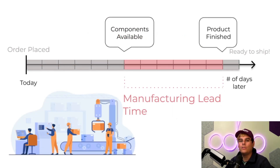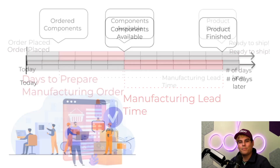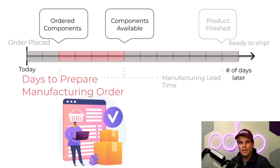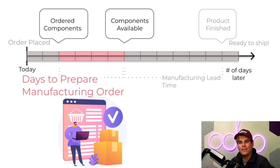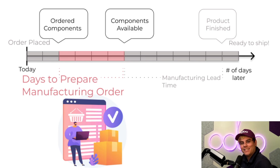Now in this video, I'm going to show you a cool new feature inside of Odoo called Days to Prepare Manufacturing Order. With it, we'll know when we need to order necessary parts. They are mini deadlines and reminders that help us finish manufacturing on time. Now let's start clickety-clacking away at the essence of logistics.